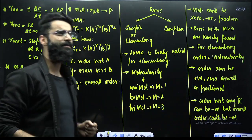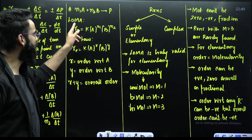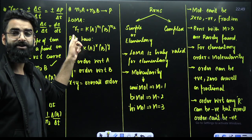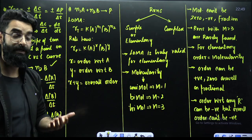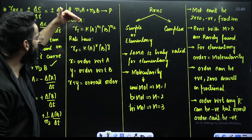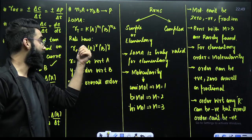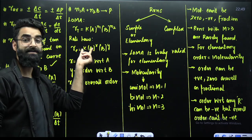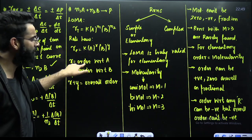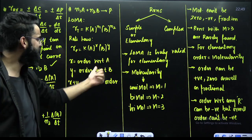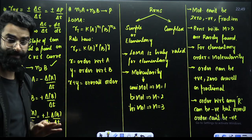Next comes the law of mass action, which is a completely theoretical concept. As per the law of mass action, rate of reaction is directly proportional to the product of active masses of reactants raised to the power of their stoichiometric coefficients. When you modify this, it gets converted into rate law, which says rate of reaction equals rate constant multiplied by concentration of A raised to power X times concentration of B raised to power Y. X is the order with respect to A, Y is the order with respect to B, and X plus Y gives the overall order of the reaction.